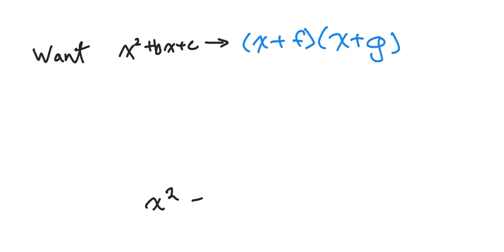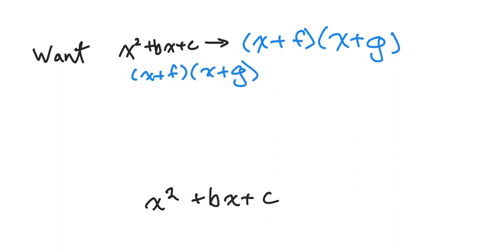Originally, we have x squared plus bx plus c. And what we're going to do is we're going to work backwards. At the end, we want x plus f and x plus g. And in order to build back up to this part, what we're going to have to do is apply FOIL. So let's apply FOIL — that means we're going to have x times everything in the second bracket, and you're going to get x squared plus gx.